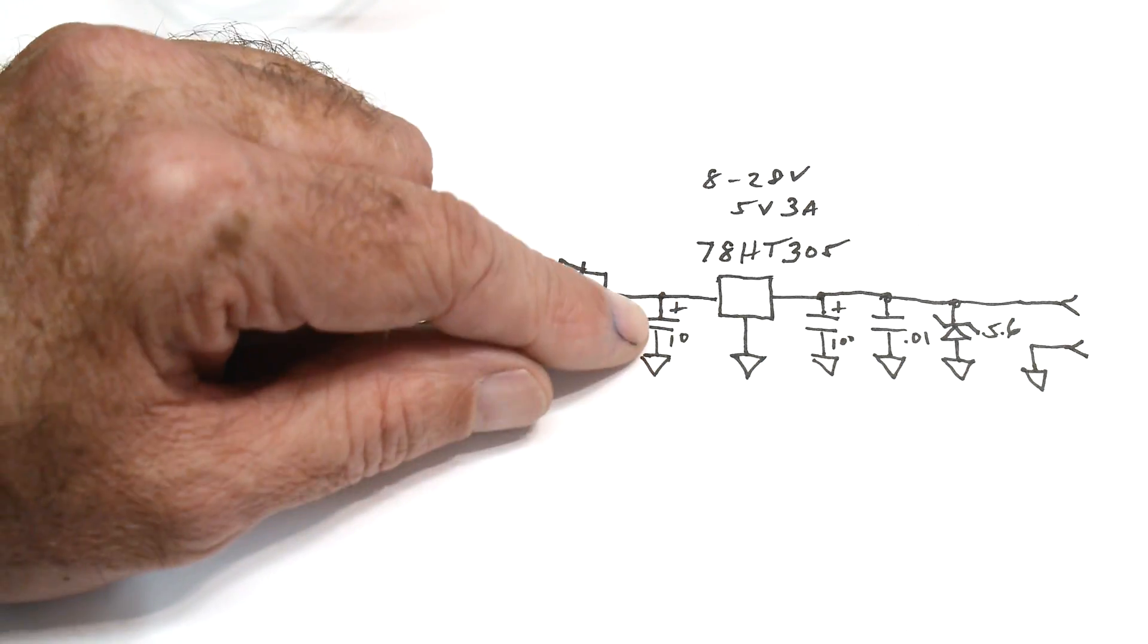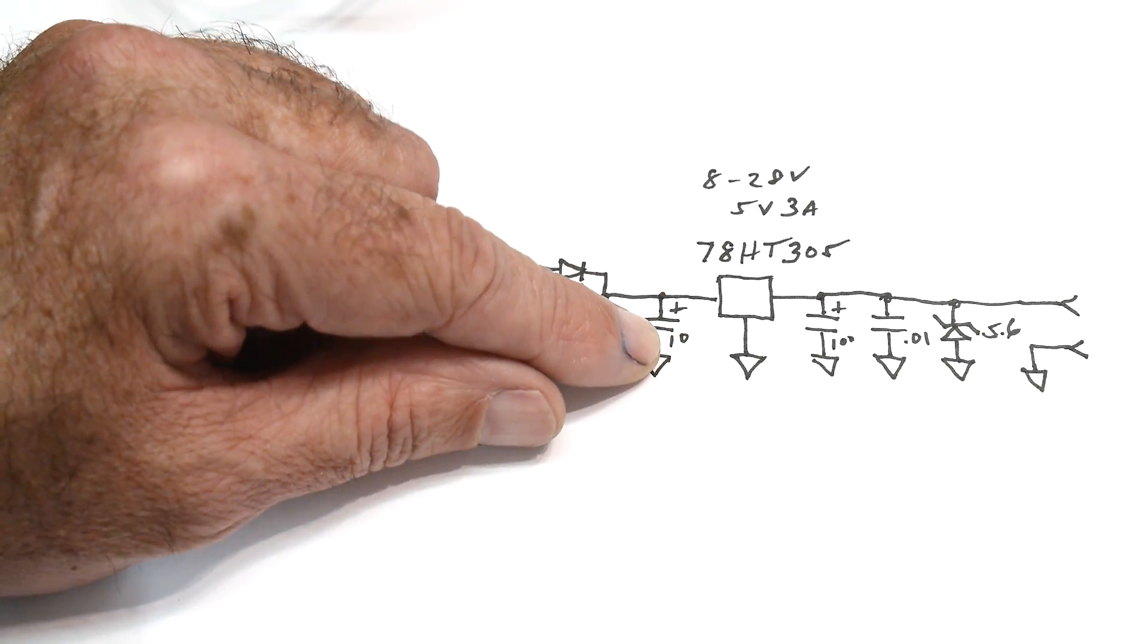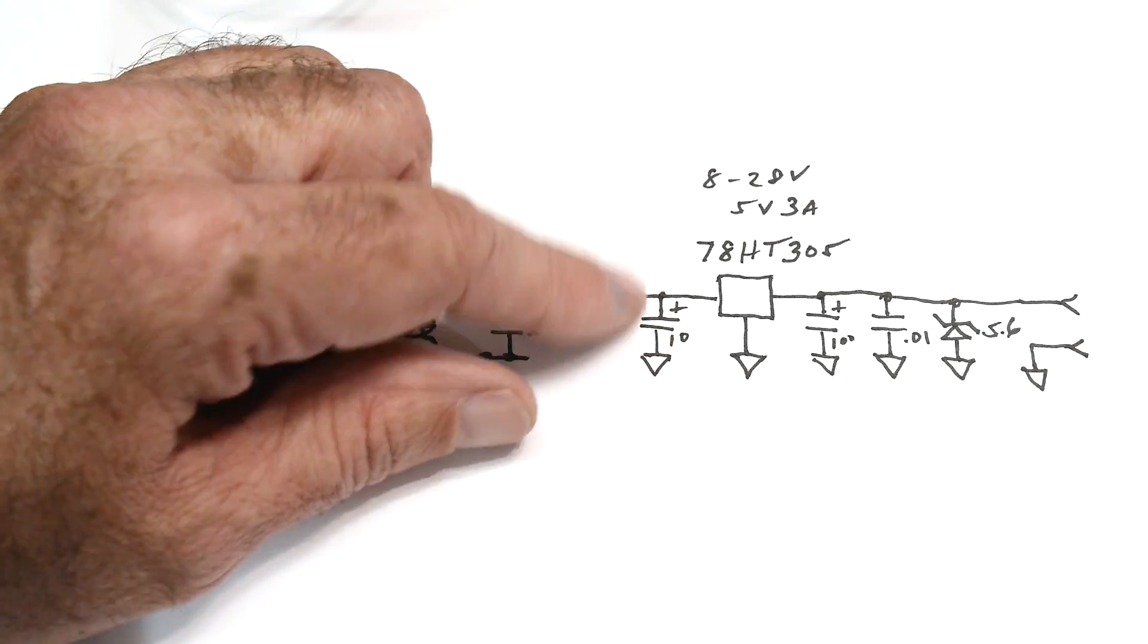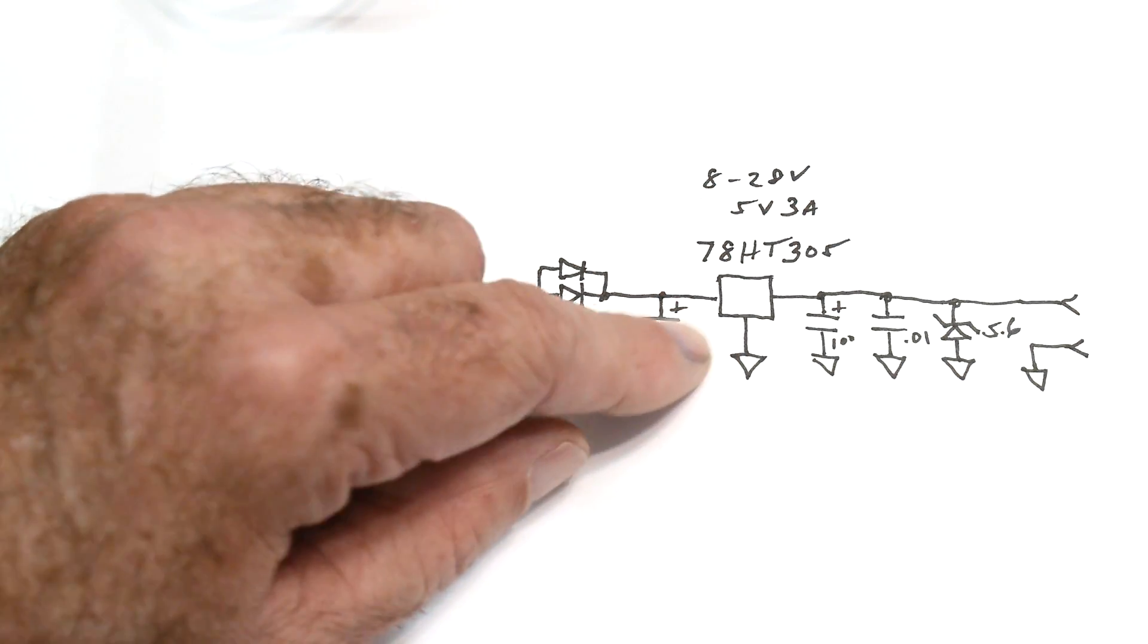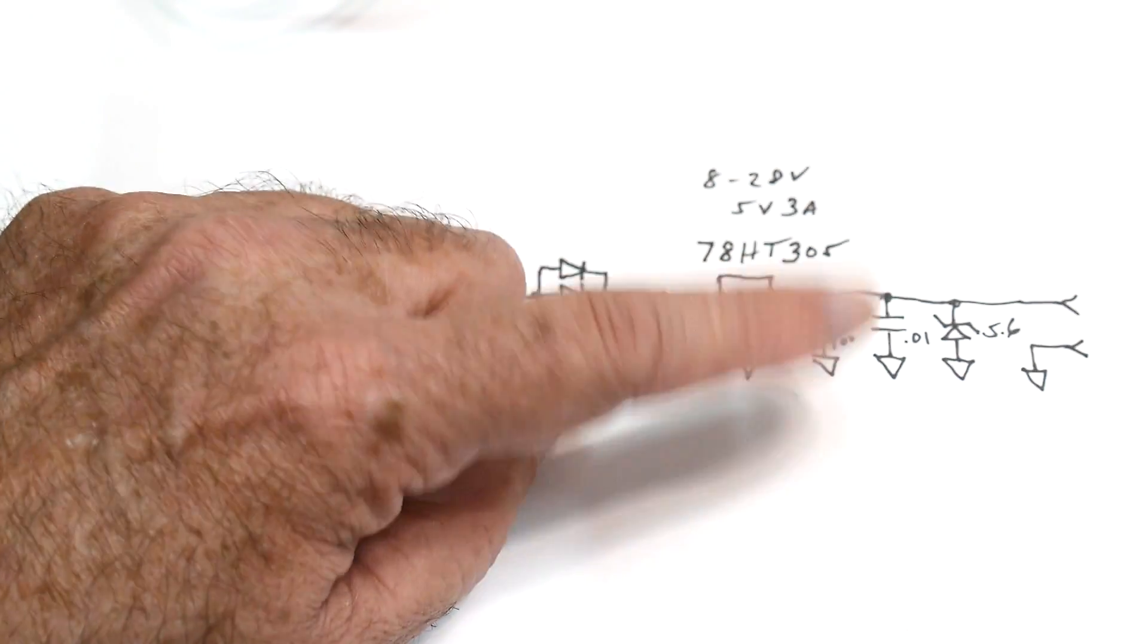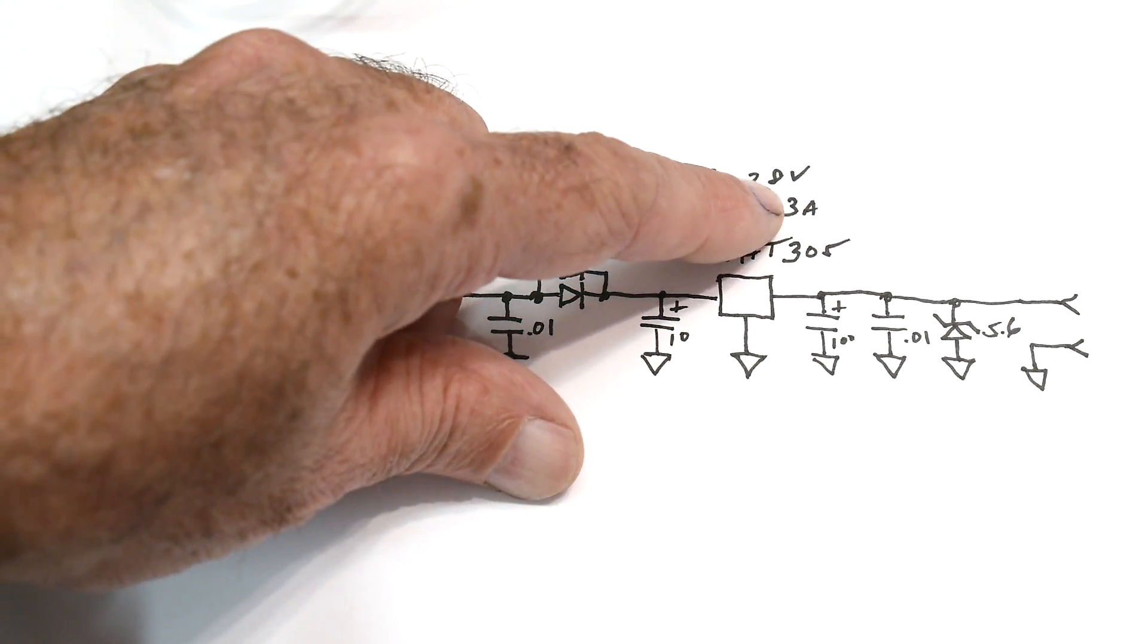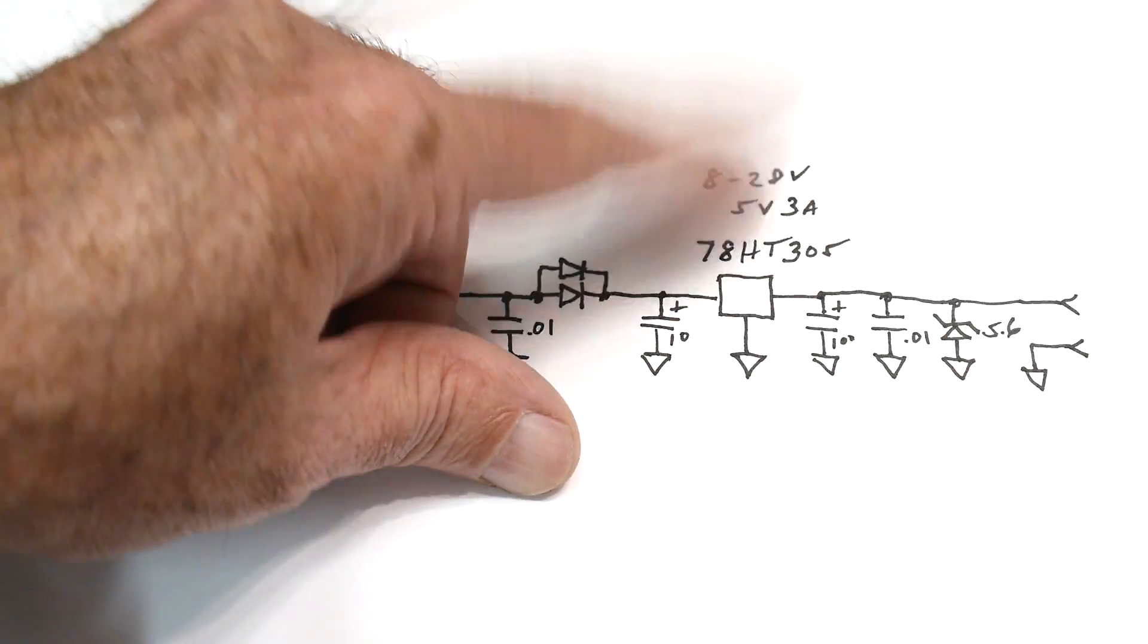Then there's a 10 microfarad tantalum. It looks like a real high-grade tantalum. It's a German tantalum. They're owned by Vishay by now. We'll take a look at that. And then this part here, which is a 78HT305. It's made by Texas Instrument, I believe. And it's its own little self-contained unit. And it's specified at 8 to 28 volts in and 5 volts 3 amps out. Okay, so that's its specification.